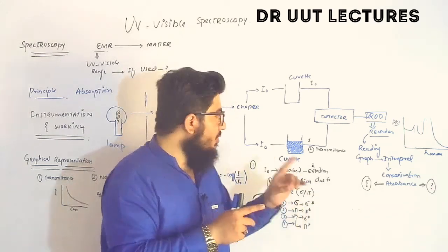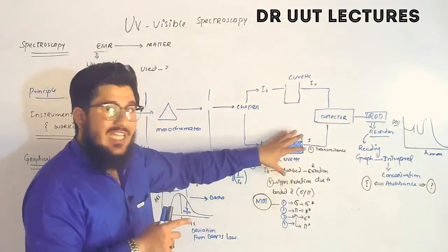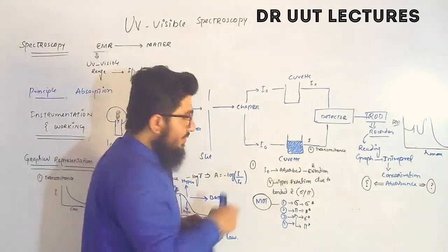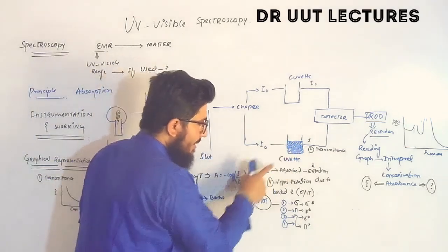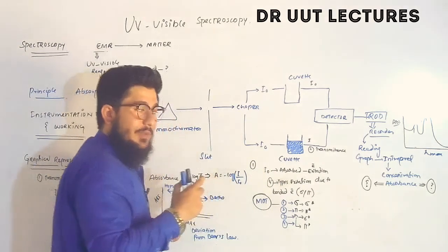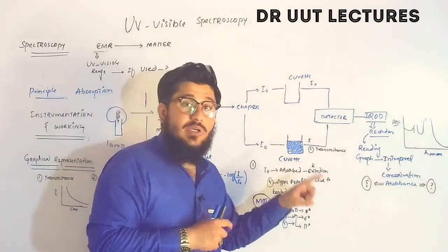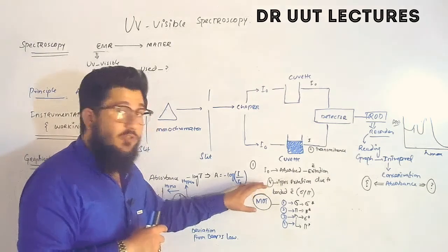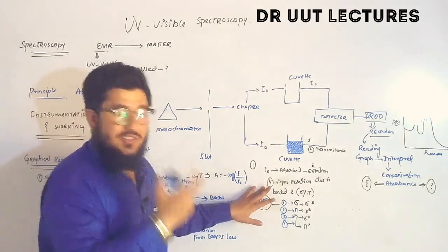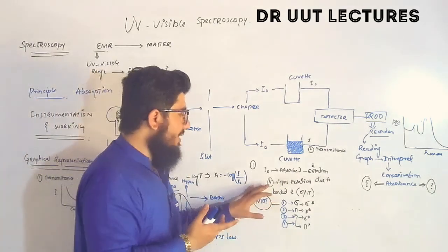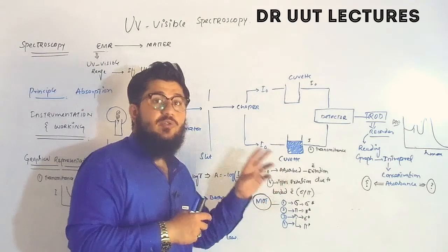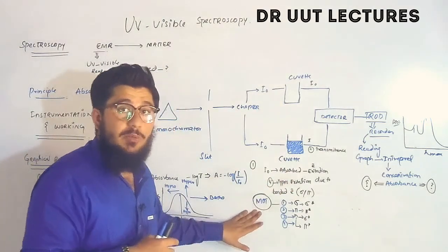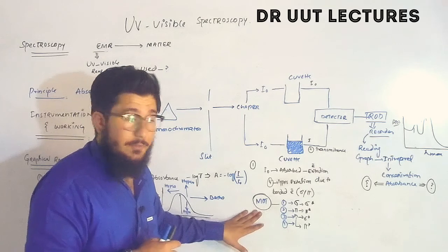The absorbance reading is obtained through a mathematical equation, which I will explain shortly. But first, when light passes through the sample and is absorbed, excitation of electrons occurs. There are four types of excitations, or transitions, of the electrons.